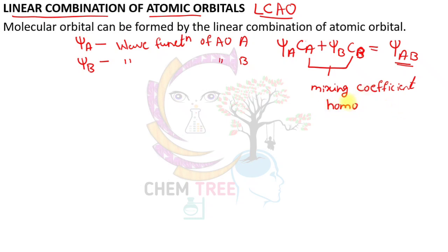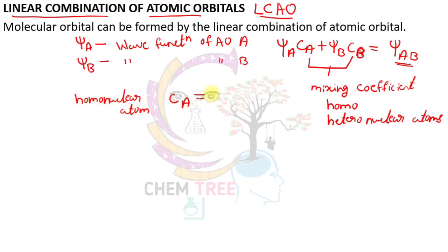The mixing coefficients depend on the type of atomic orbitals — whether we consider homonuclear or heteronuclear atoms. For homonuclear atoms, the mixing coefficient satisfies c_A = c_B, and taking the square root gives c_A = ±c_B. By this, we find that the molecular orbital can have a positive or negative sign.